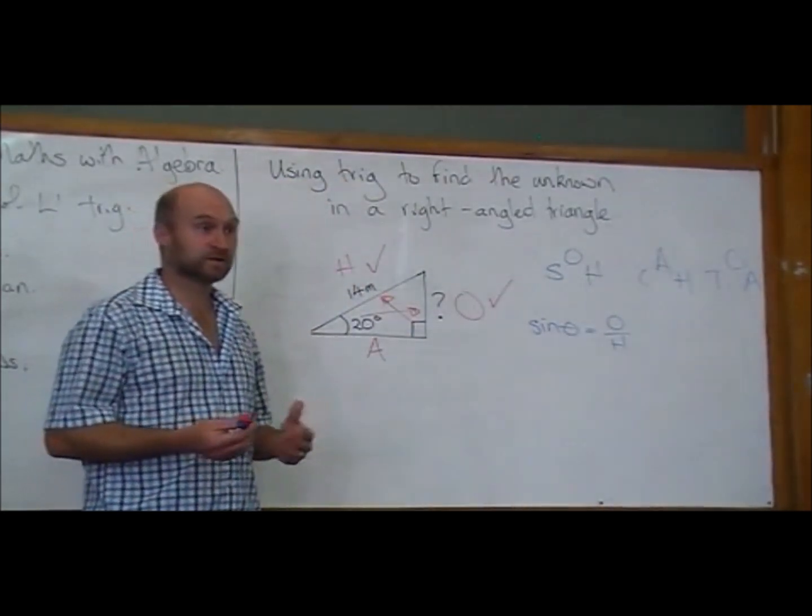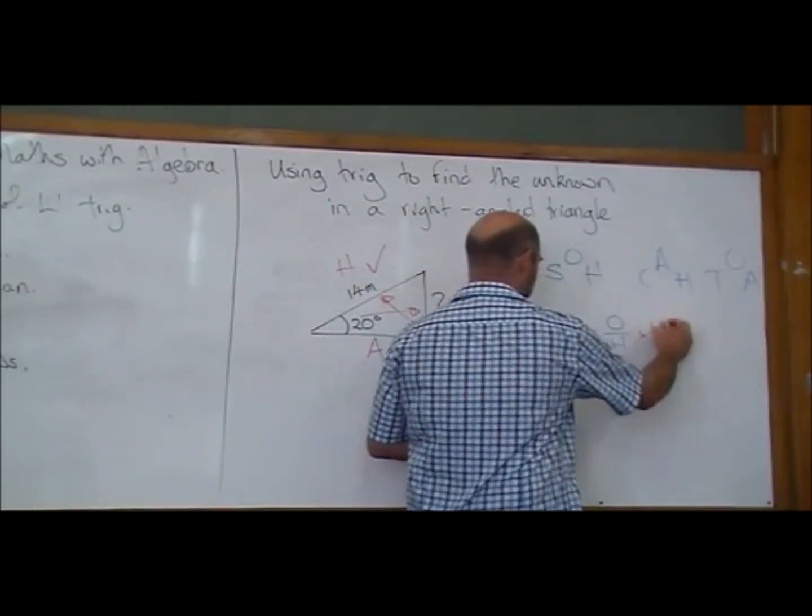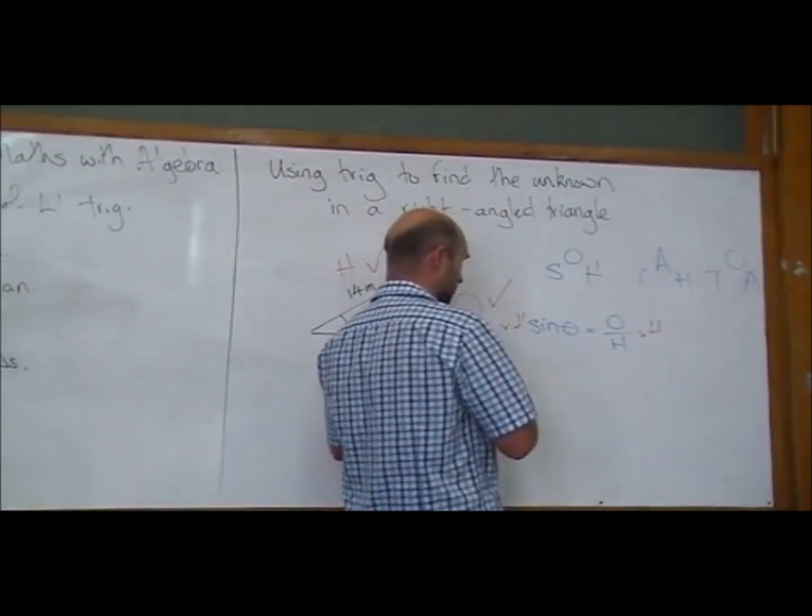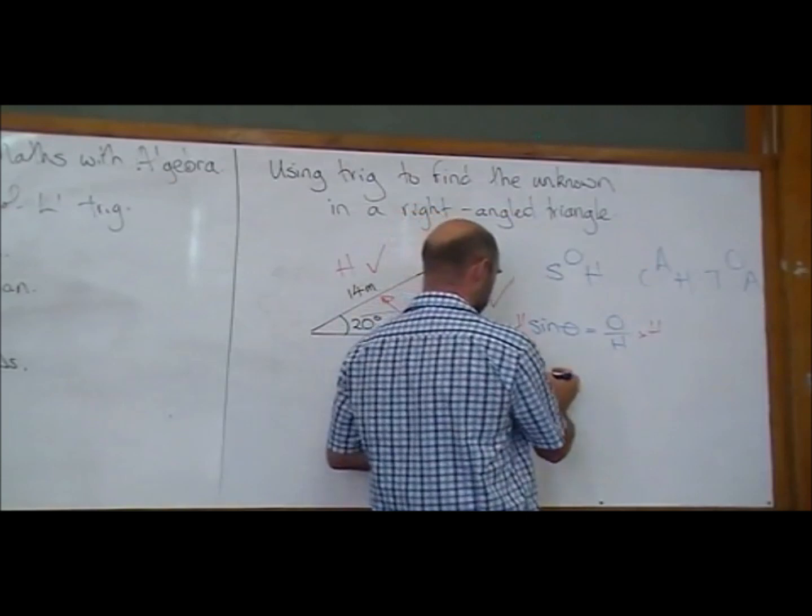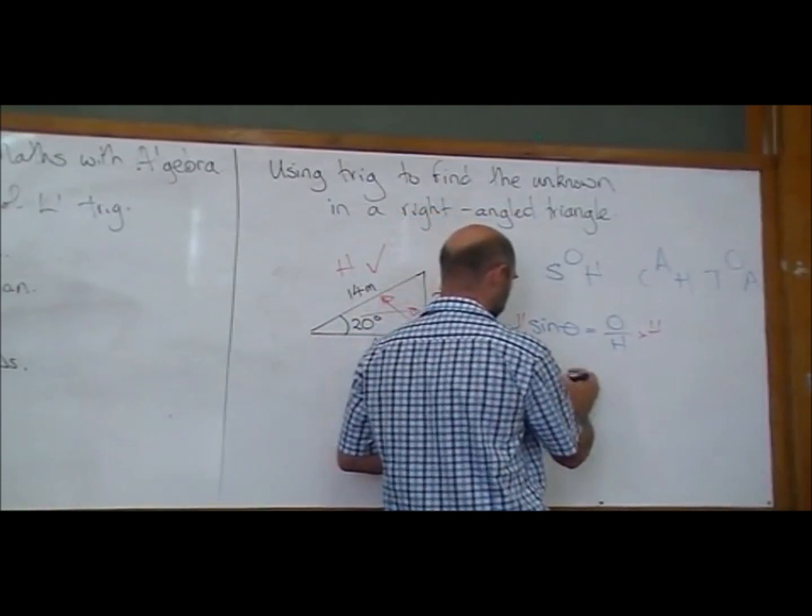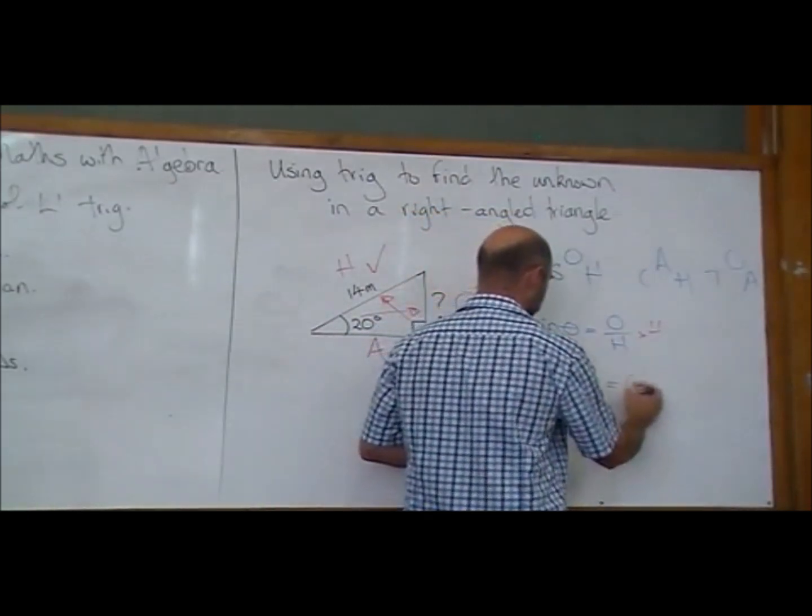Times by H. Times by H. Nice. So both sides, times by H, times by H. And we're going to end up with H sine theta is equal to O.